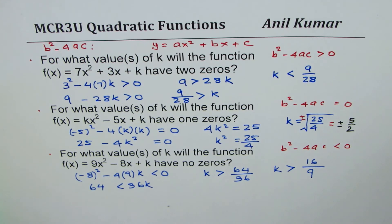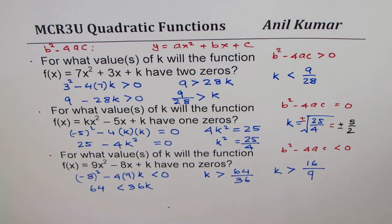So these are the values of k which you find from the given conditions. The idea is to understand what the discriminant b² - 4ac is and based on that value whether it is positive, 0 or negative we can decide whether we are going to have two zeros, one zero or no zero. I hope that really helps. Thank you and all the best.